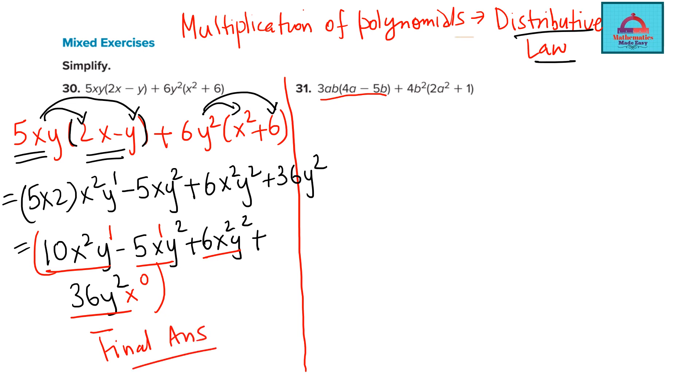Let's now do similarly this question. So I will use distributive law. So I am going to multiply term by term. So I put the brackets and I put the arrow. So let's multiply 3 with 4 is 12. A with A is A². B¹. Minus sign as it is. 3 with 5 is 15. AB². This is the multiplication of the first term.